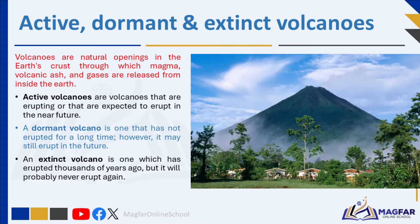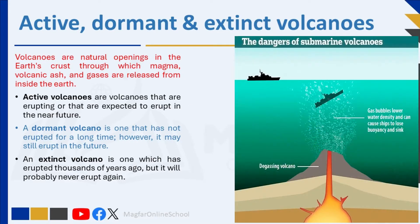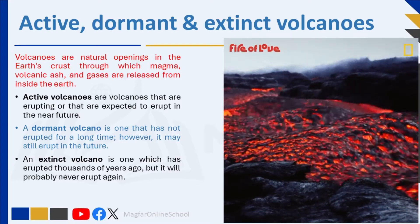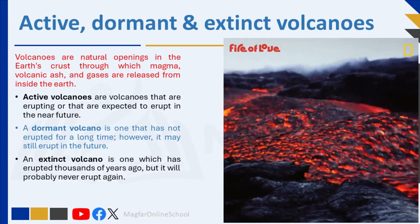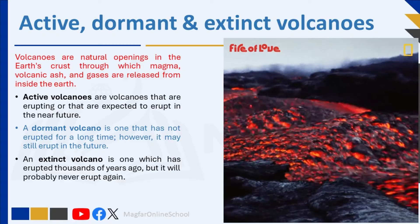There are more than 1,500 active volcanoes on earth. There are also more than 80 volcanoes under the ocean. These volcanoes under the ocean are sometimes called submarine volcanoes. Active volcanoes are volcanoes that are erupting or that are expected to erupt in the near future.